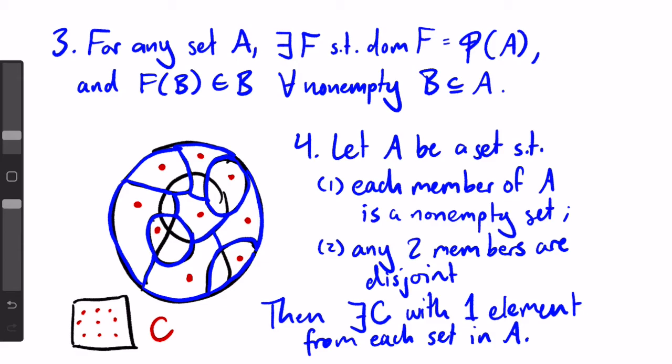Hopefully it makes sense how all these forms are the same, but it did take me a little while to understand it myself, so I would highly encourage you to look at the example problems linked in the description for a bit more practice with all these different forms of the axiom of choice.